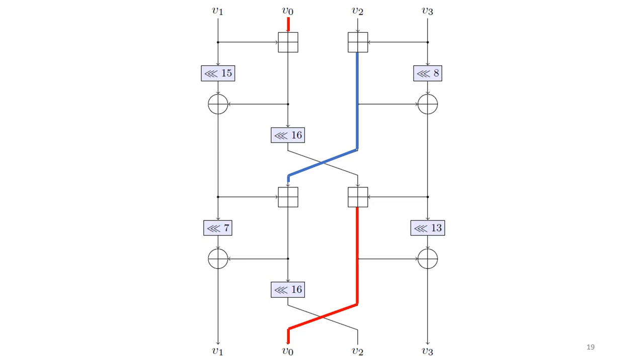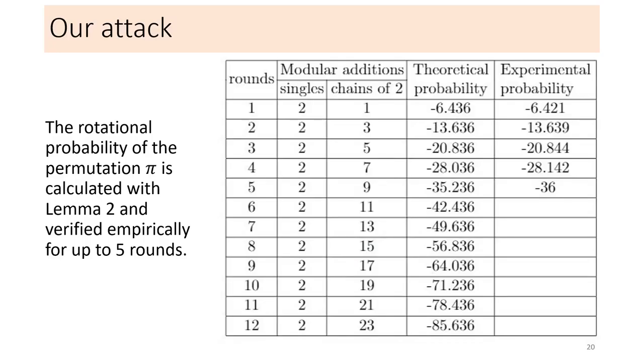Further, the second modular addition in the third sub block form a chain of two additions when continued to the next round, which is colored in red. Hence, with each additional round, we have two more chains.